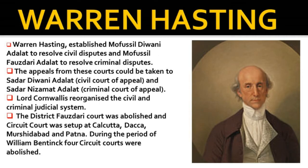Warren Hastings established Mofasal Diwani Adalat to resolve civil disputes and Mofasal Faujdari Adalat to resolve criminal disputes. Appeals from these courts could be taken to Sadar Diwani Adalat, i.e., the Civil Court of Appeal, and Sadar Nizamat Adalat, i.e., the Criminal Court of Appeal. Lord Cornwallis organized the civil and criminal judicial system. Under Cornwallis, the District Faujdari Court was abolished and Circuit Courts were set up at Calcutta, Dhaka, Murshidabad, and Patna. During the period of William Bentinck, four Circuit Courts were abolished.